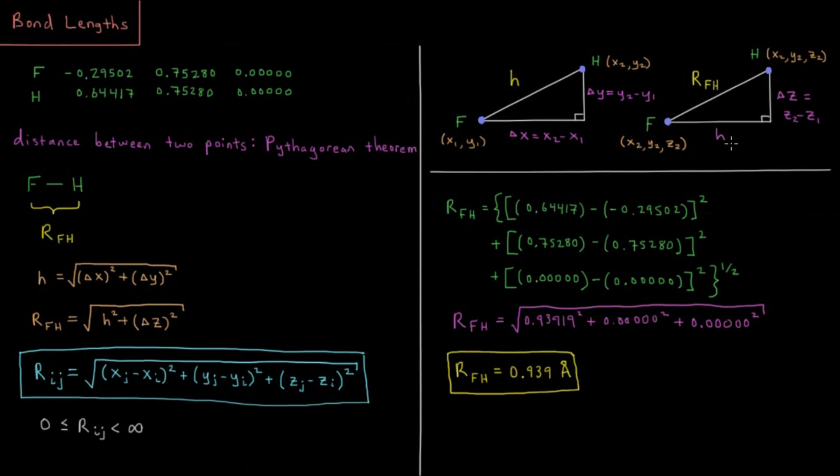If I substitute in the value of H here, I have the bond length for my final bond, the length or distance between any two atoms I and J, where I and J are just indices, one through N if I have N atoms. RIJ is going to be the square root of XJ minus XI squared plus YJ minus YI squared plus ZJ minus ZI squared.